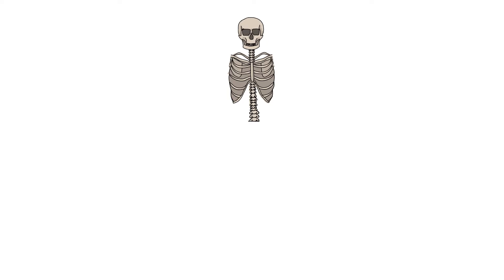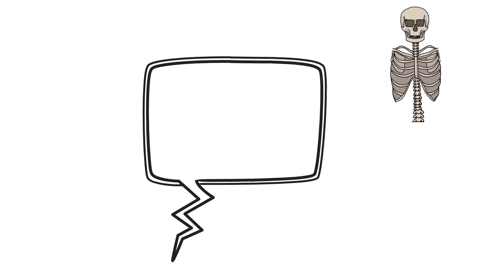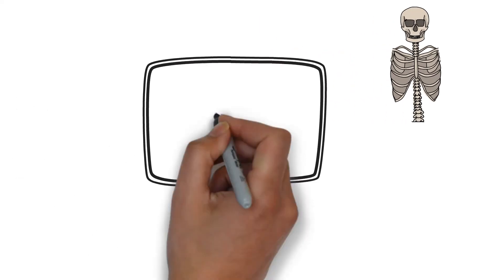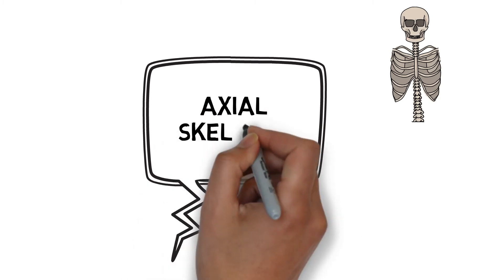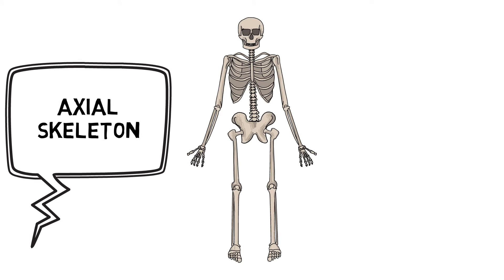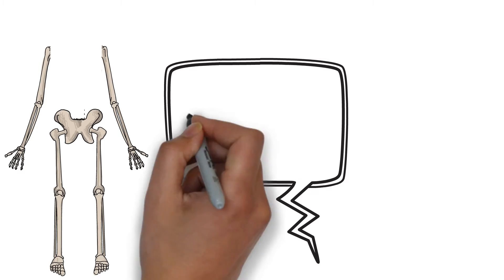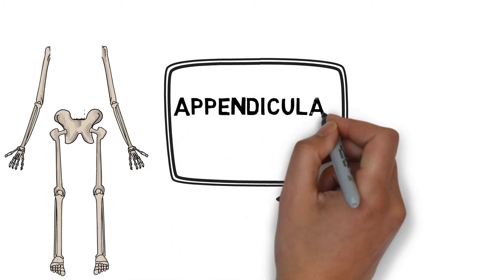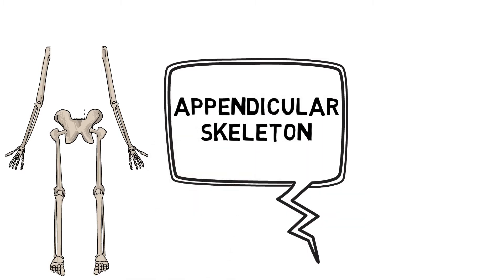The skeletal system can be divided up into two parts. The axial skeleton is the central core of the body that consists of the skull, vertebral column, ribs, and sternum. And the appendicular skeleton, which includes the shoulder girdle, bones of the arms, wrists, and hands, and bones of the legs, ankles, and feet.